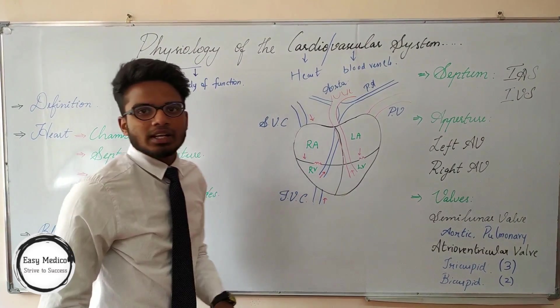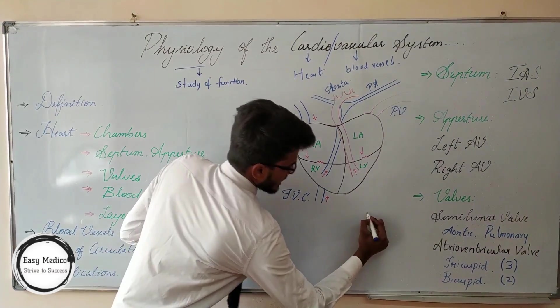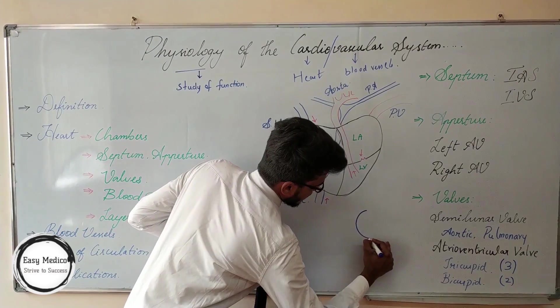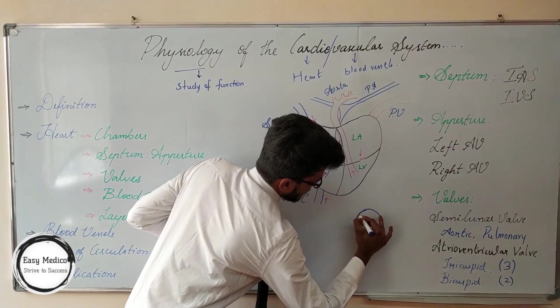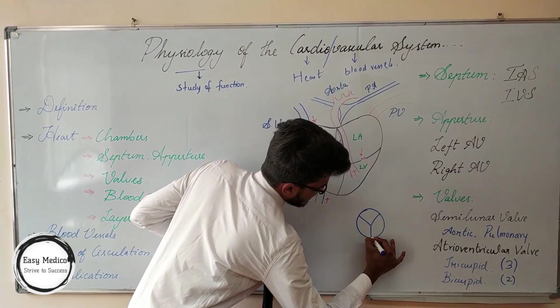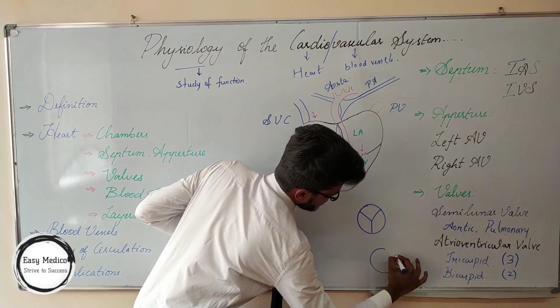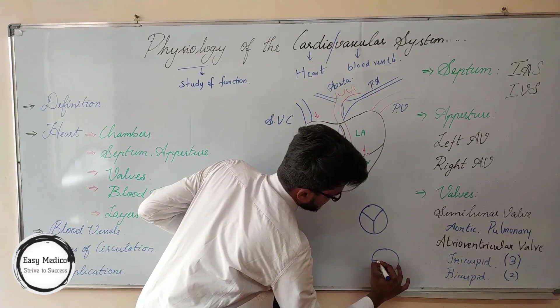Tricuspid means three cusps — the cusps are three in number. Bicuspid includes two cusps.